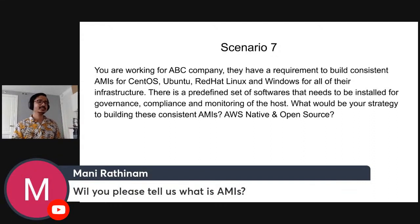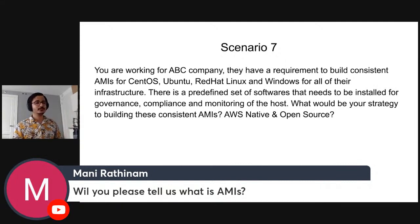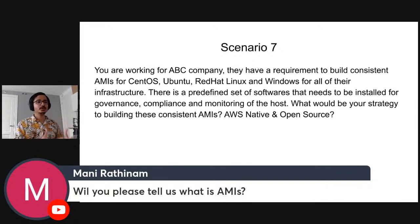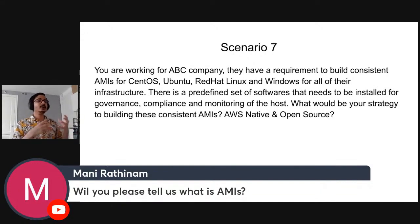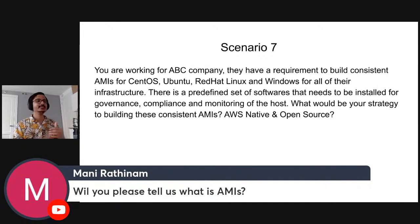AMI is Amazon Machine Image. It is not only an operating system. There are application servers and applications. Amazon Linux AMI, Ubuntu, CentOS, Red Hat Linux, SUSE Linux, Windows — this is not only the operating system. It is operating system plus application servers plus applications.